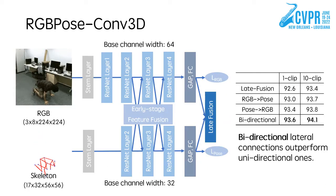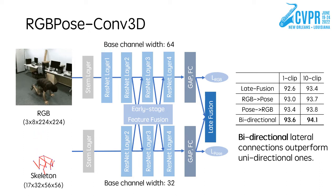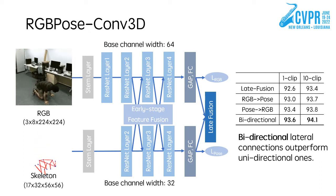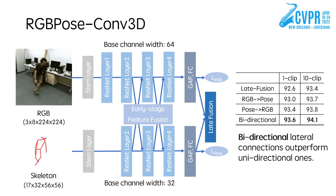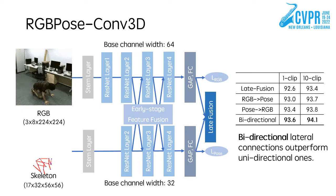We further propose RGB-PoseConv3D for the early fusion of human skeletons and RGB frames. It is a 3D CNN with two pathways, processing skeleton and RGB respectively. With bidirectional lateral connections, RGB-PoseConv3D significantly outperforms the late fusion baseline.